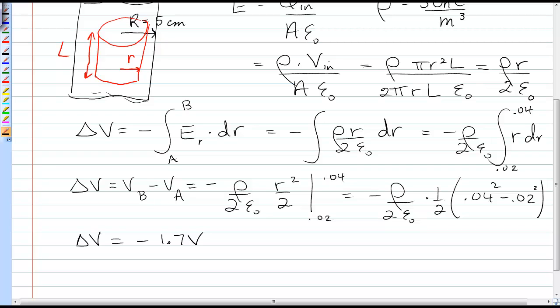Now the magnitude of that would be positive 1.7, but it makes sense that that difference in voltage is negative because we're going in the direction of the electric field and voltage decreases in the direction of the electric field.